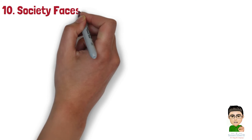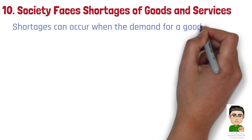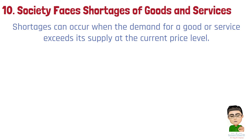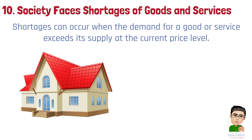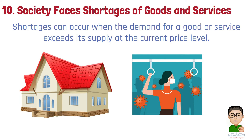Number 10: Society faces shortages of goods and services. Shortages can occur when the demand for a good or service exceeds its supply at the current price level. This can be due to natural disasters, policy decisions, or changes in consumer preferences. Example 1: The shortage of affordable housing in suburban areas can result from zoning laws that restrict the construction of new housing units. Example 2: During the COVID-19 pandemic, many countries experienced shortages of personal protective equipment for healthcare workers, due to increased demand and disrupted supply chains.